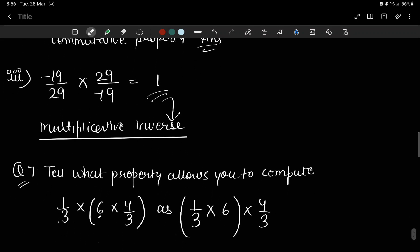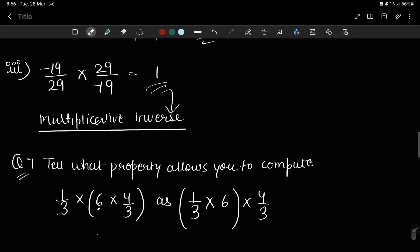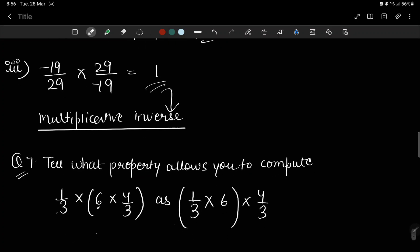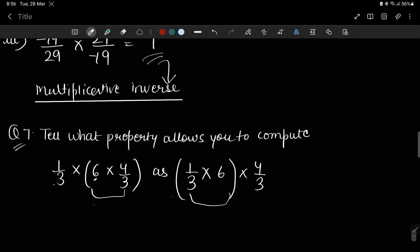This is the last question of the exercise. Tell what property allows you to compute this equation. I mean, tell you the name of property. Now let's see. The first bracket is here. Now the bracket is here. It was before 4 by 3. It was before 4 by 3. Now who has been associated with 6? 1 by 3. The association changes. The bracket changes. The bracket changes so that our calculation is easy. When the brackets change, the calculation is easy. Then which property will be associated?